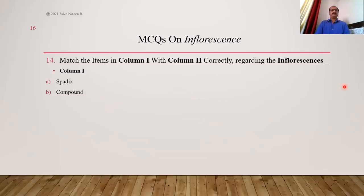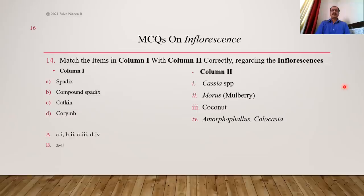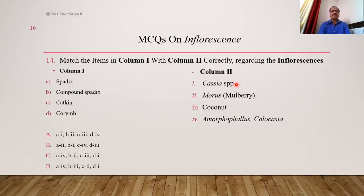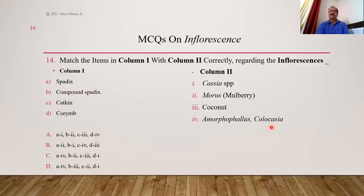Again a matching type question — spadix, compound spadix, catkin, corymb — different types of inflorescence given with examples to match. Cassia species show corymb type; mulberry shows catkin (pendant, wiry rachis); coconut is an example of compound spadix; Amorphophallus (suran in Marathi), Colocasia (arum, aru in Marathi) are examples of spadix type of inflorescence. After matching, the right answer is option D.